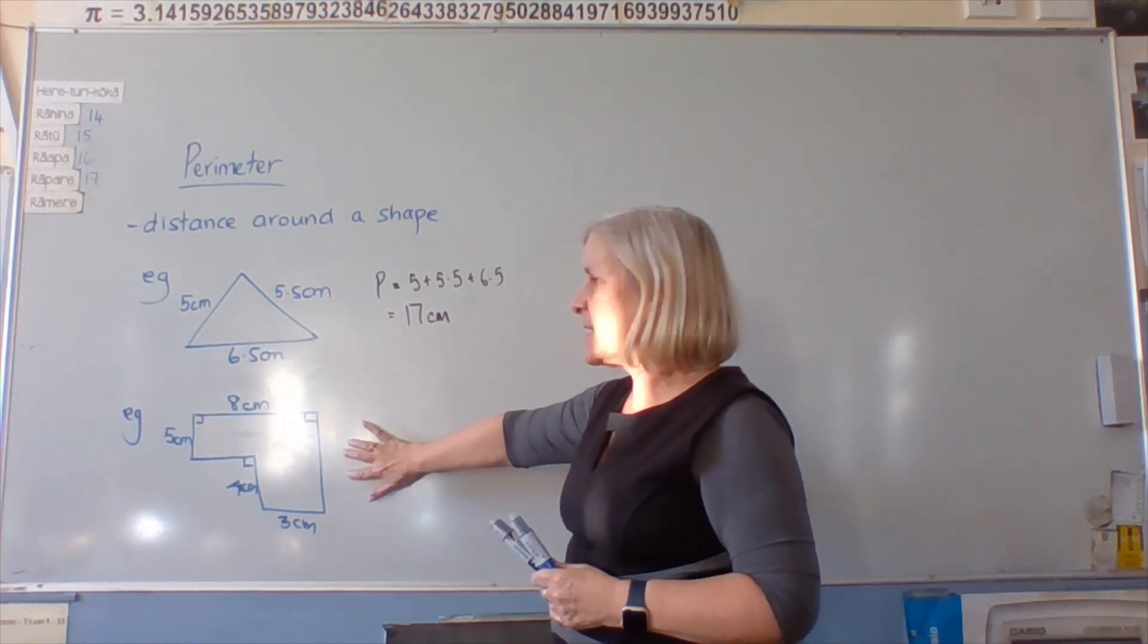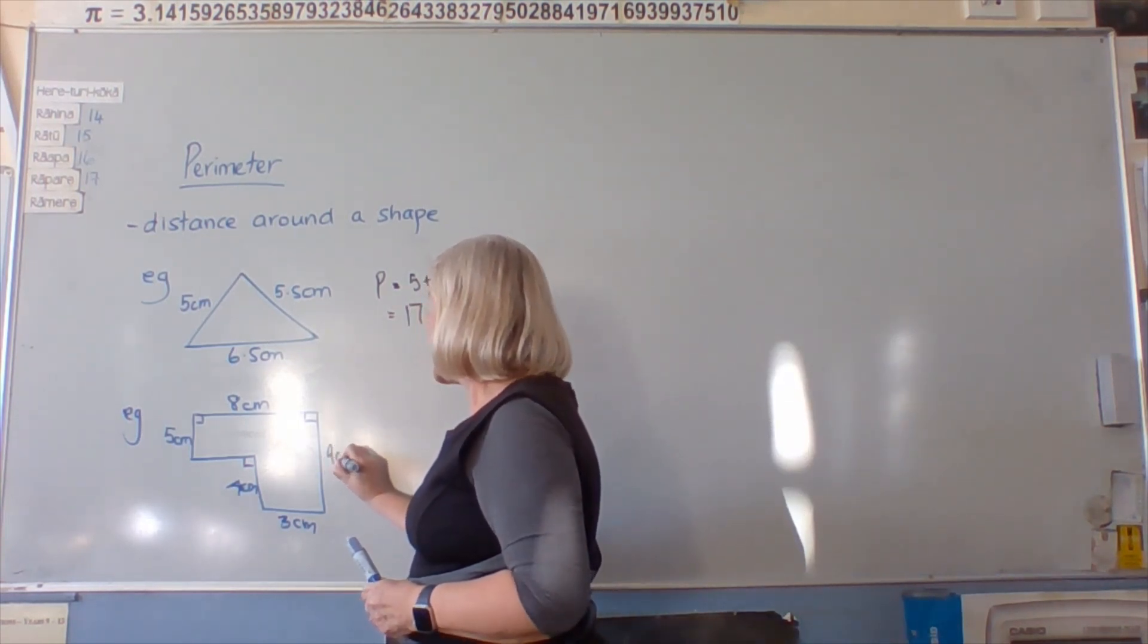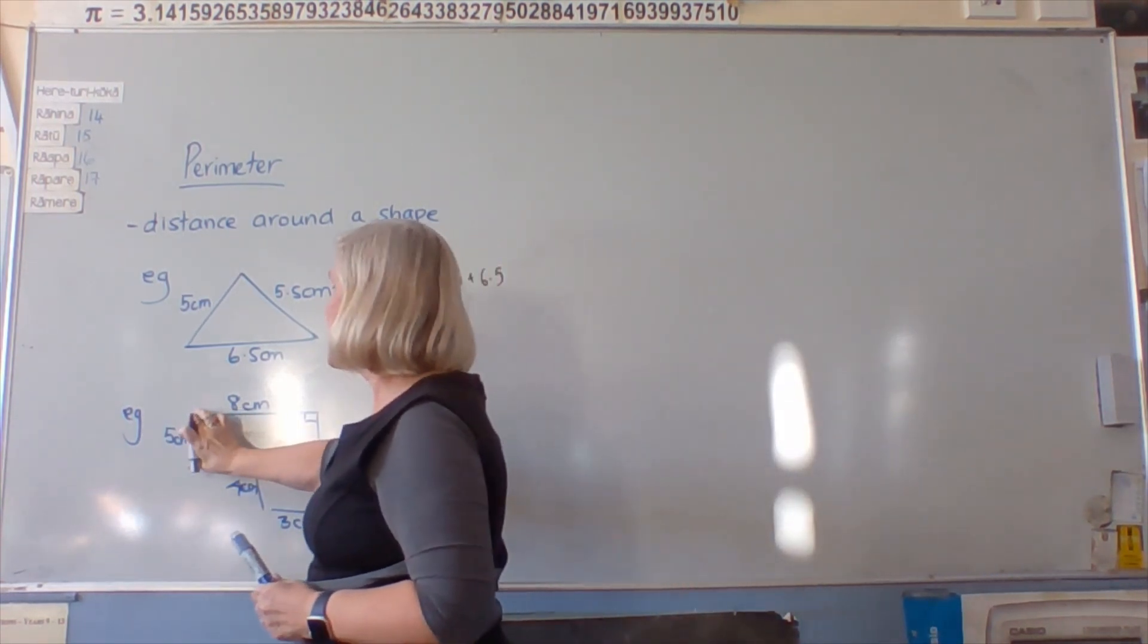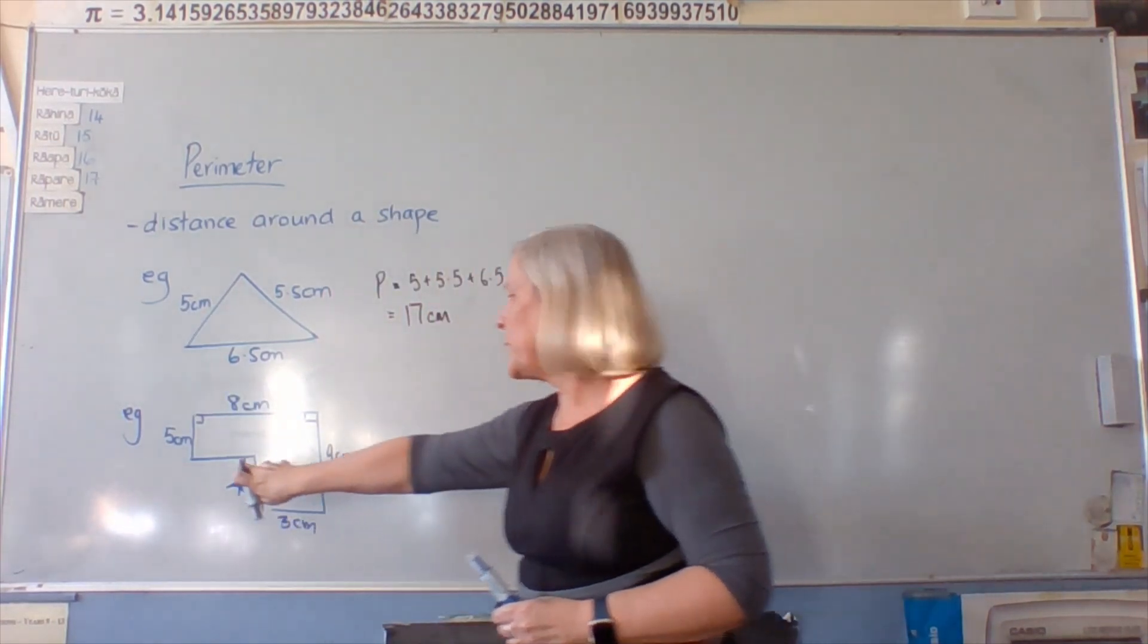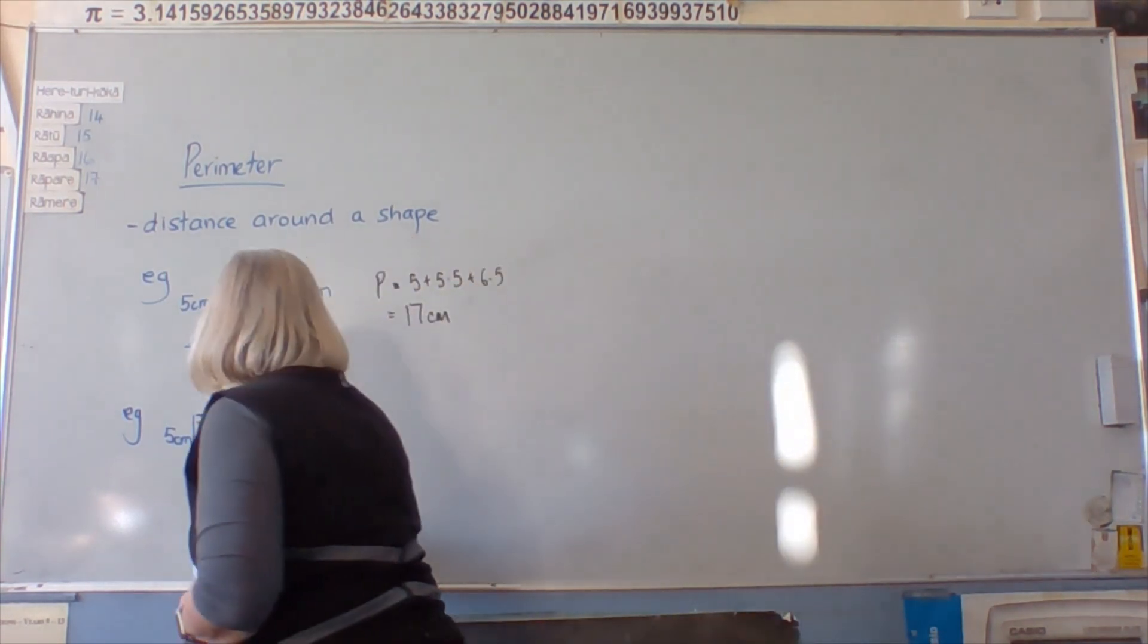So what would be the length of this side? 9 centimetres. Good. We'd add up this one and this one. All right. What would be the length of this side? 5 centimetres. Good. 5 centimetres is correct.